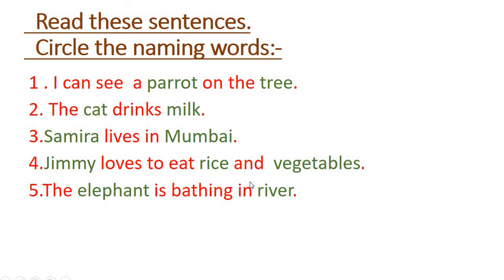So now we have learned this. You have to read the sentence, then circle the naming words. I have written the naming words in green color — those are the words you have to color. These all are naming words.